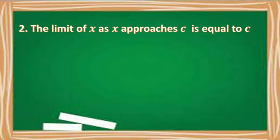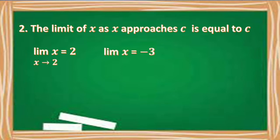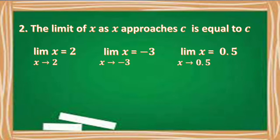Number 2: The limit of x as x approaches c is equal to c. For example, the limit of x equals 2 as x approaches 2. The limit of x equals negative 3 as x approaches negative 3. And the limit of x equals 0.5 as x approaches 0.5.